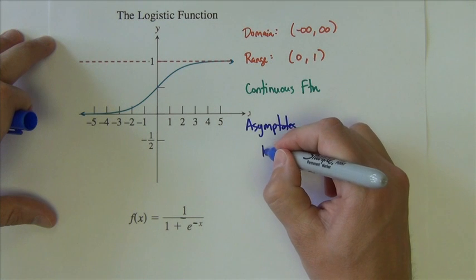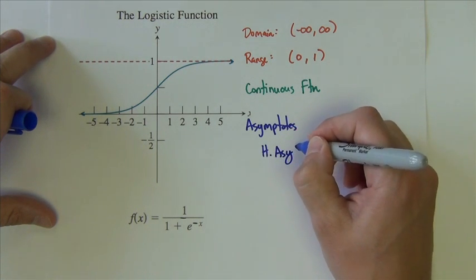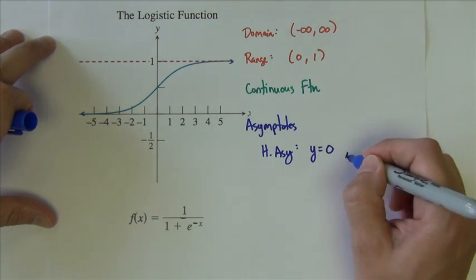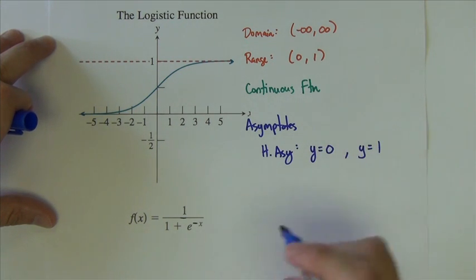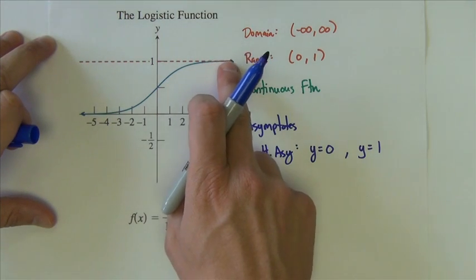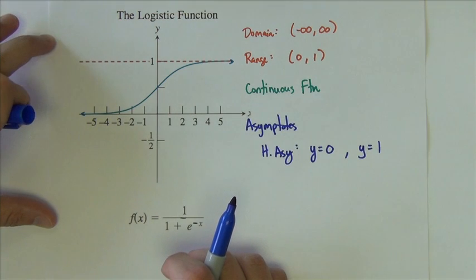And in fact it has two horizontal asymptotes at y equals 0 and y equals 1, has an asymptote on the left side at 0, and asymptote on the right side at 1.